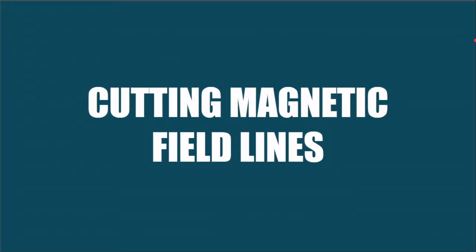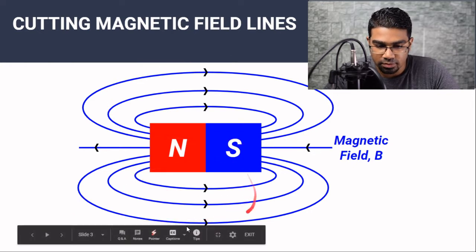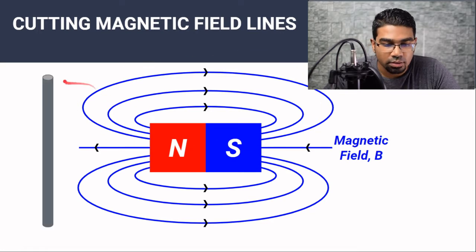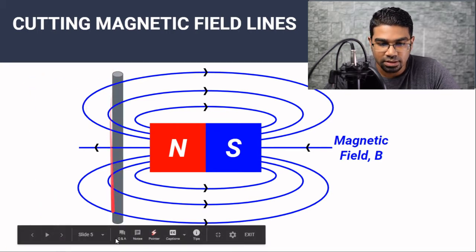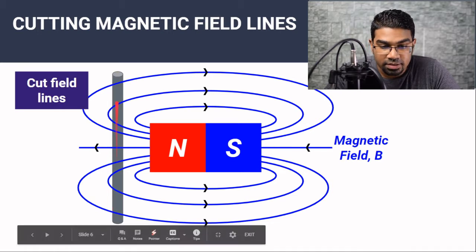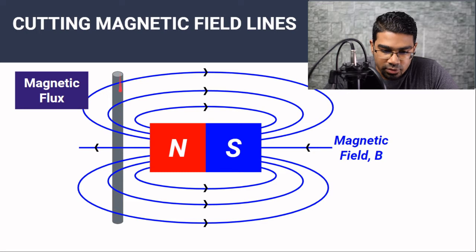It all begins with the cutting of magnetic field lines. Let's say we have a permanent magnet. Around the magnet we will have magnetic field lines, and the magnetic field's direction is from north to south. When we have a conductor that is out of the field, nothing happens. But when we place the conductor in the magnetic field, you will notice that there are cut field lines. The conductor cuts the magnetic field lines, and this is quantified as magnetic flux. Magnetic flux is a method to quantify the number of field lines that are cutting through the area of the conductor.